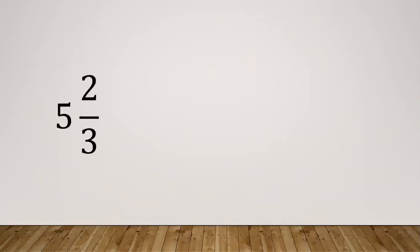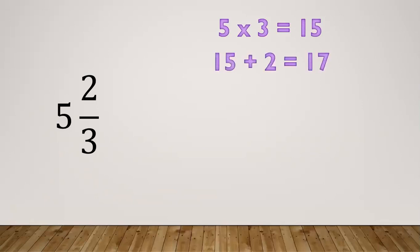Another example: 5 and 2/3. Multiply 5 times 3 equals 15, then 15 plus 2 equals 17. So the answer is 17/3.